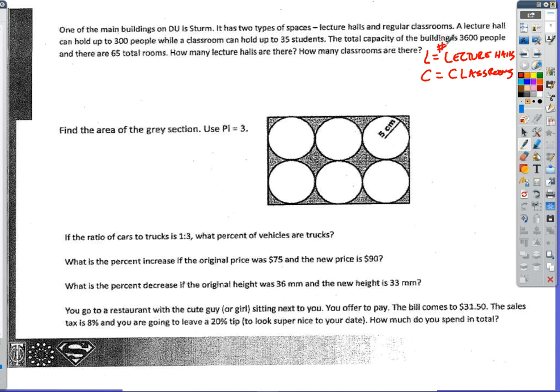And more importantly, this is the number of students. This is the number of lecture halls, number of classrooms. And then it goes on to say that a lecture hall can hold 300 people, and a classroom will hold 35 students. The whole capacity of the building is 3600 people, and there are 65 total rooms. How many lecture halls are there?